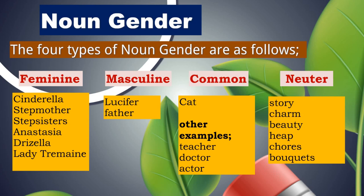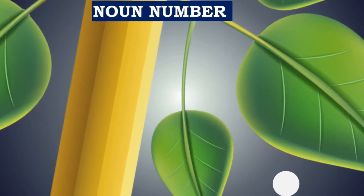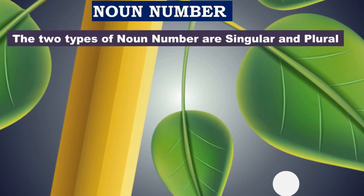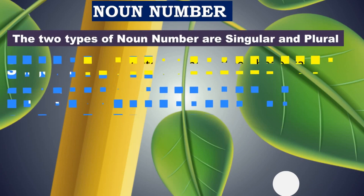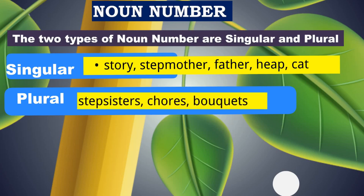Now that we have understood noun gender, we move on to noun number. There are two types: singular and plural. From the passage, the singular ones are story, stepmother, father, heap and cat. And the plurals from the passage would be stepsisters, chores, bouquets, etc.